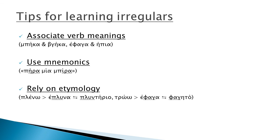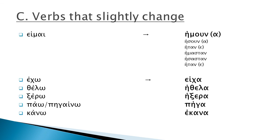Third, rely on etymology. For example, the verb meaning 'to wash' changes in the past tense to a form sharing the same stem with the word for 'washing machine.' Likewise, the verb meaning 'to eat' changes in the past tense to a form sharing the same stem with the noun for 'food.' Lastly, there are some verbs that don't really change in the past tense, or change only slightly, due to changes that occurred in ancient Greek and remain in modern Greek today.